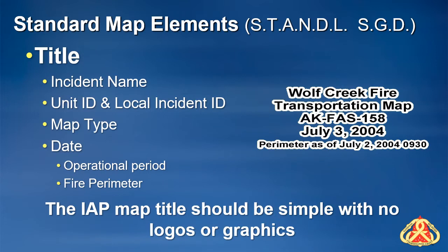The title is the basic description of the map, including items such as incident name and map type. The unit identifier and the local incident identifier should also be included — for example, ID-BOF-0095. The title can range from extremely fancy to simple. The CIDA will help you determine how the information should be displayed on the products. Review what the incident number is and include the year because the maps will become a historic document. It is important to note the date and time the data was collected as well.